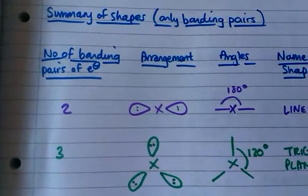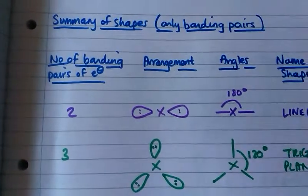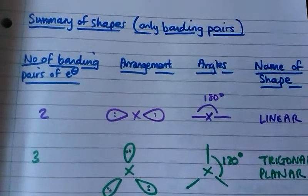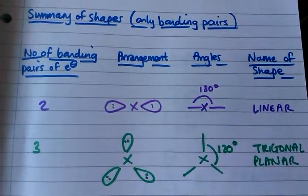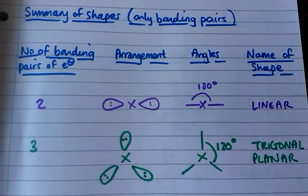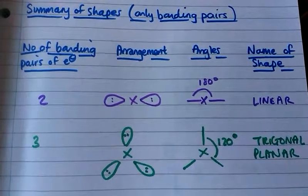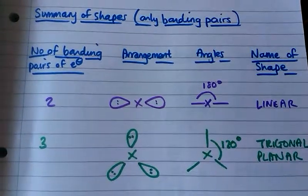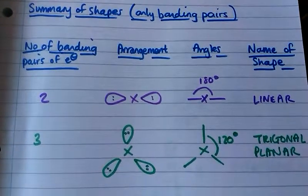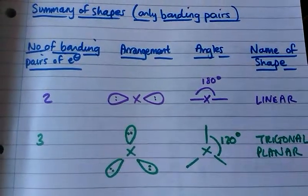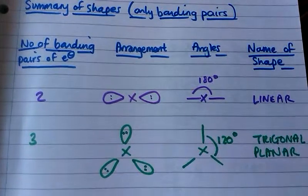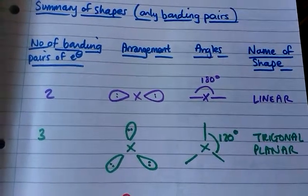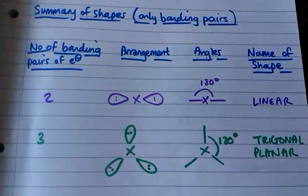Firstly, when we're dealing with molecules where we have just bonding pairs of electrons involved: when we have two bonding pairs of electrons, the bond angle around the central atom is 180 degrees and that shape is called linear. When there are three bonding pairs of electrons, the bond angle is 120 degrees and that shape is called trigonal planar.